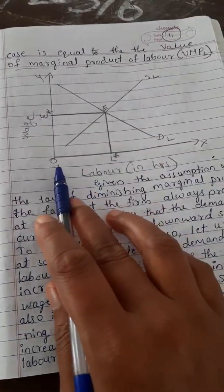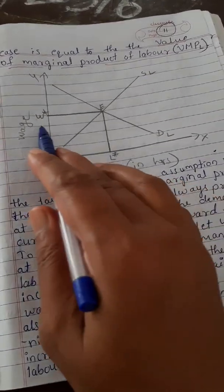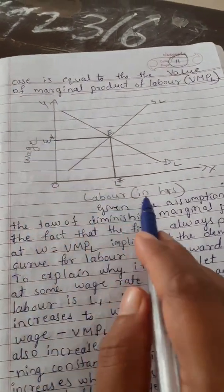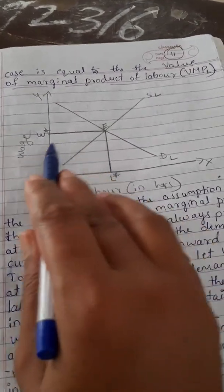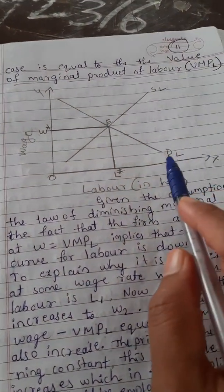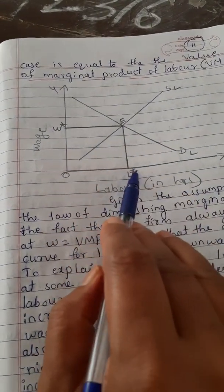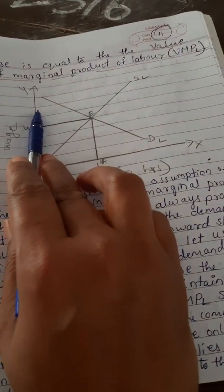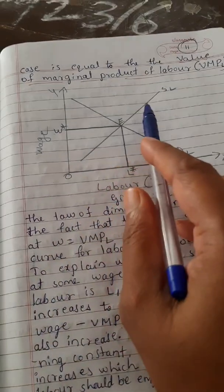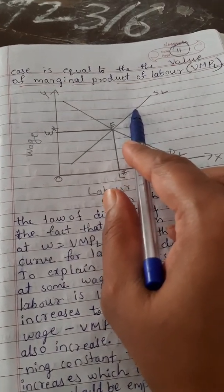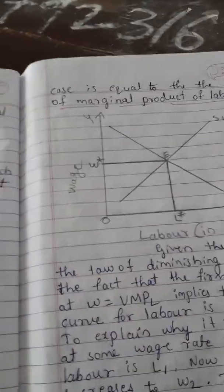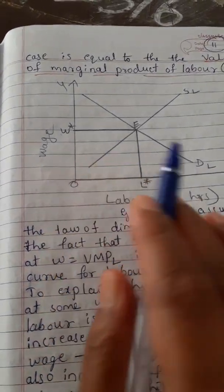This is explained with the help of a diagram. The X-axis represents labor in hours and the Y-axis represents the wage rate. The equilibrium is shown by W star (wage rate) and L star (equilibrium labor). The intersection point of the supply of labor (SL) and demand for labor (DL) gives the equilibrium. When the wage rate is higher, the demand for labor is less.